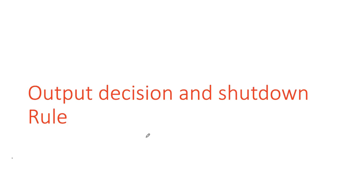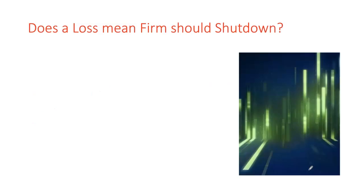The second part of the chapter focuses on the output decision of the firm — essentially, to produce or not to produce. What makes a firm decide whether to produce a positive amount or shut down? This output decision leads us to the shutdown rule. Just like we had the optimal quantity rule, we'll now analyze what makes a firm decide between producing at a loss versus shutting down. A loss is when your price is below your ATC, meaning you earn per unit losses regardless of how much you produce.